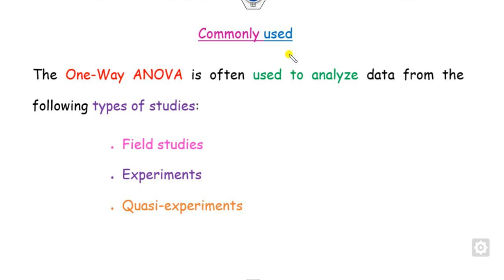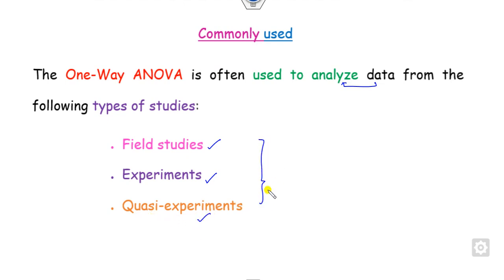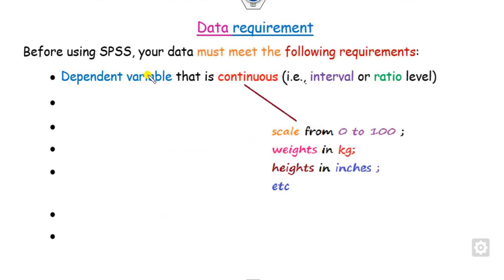Where can you use this ANOVA? ANOVA is commonly used in field study experiments. Whenever you have to analyze data from field studies, experimental work, or quasi-experimental surveys, you can apply ANOVA for your results.